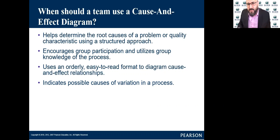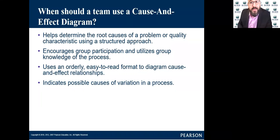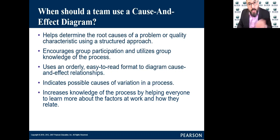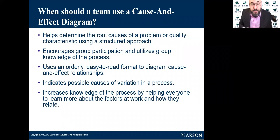It indicates possible causes of variation in the process. Once you brainstorm about the categories, you will be able to identify variation in the process, and that will help you improve the process. It also increases knowledge of the process by helping everyone learn more about the factors at work and how they are related — helping people understand the problem and the factors that will impact it at a deeper level.